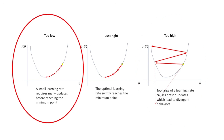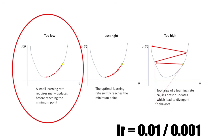Watch for telltale signs: if your loss oscillates wildly, your learning rate is too high; if it barely improves, it's too low. Start with common defaults like 0.01 or 0.001, and consider learning rate schedules that adjust dynamically during training.